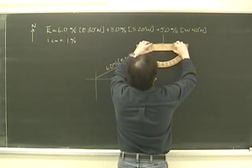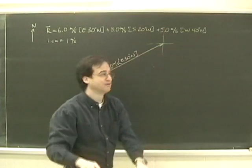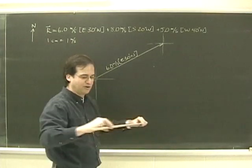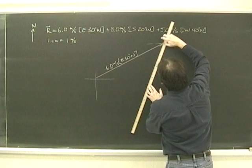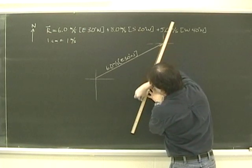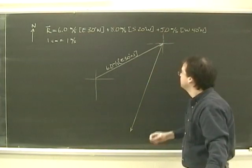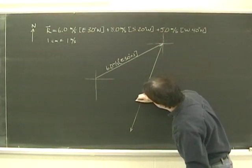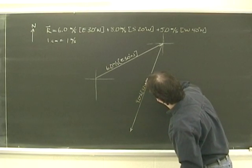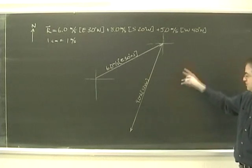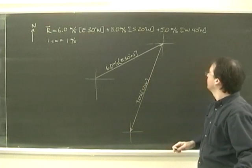So we go here, south 20 west, and mark it off. So there we go. Now we've got the second vector on. We've got to put a little bearing here to get ready for the next one.